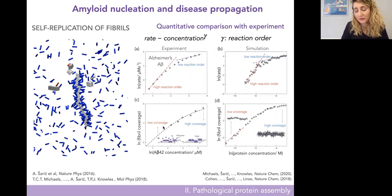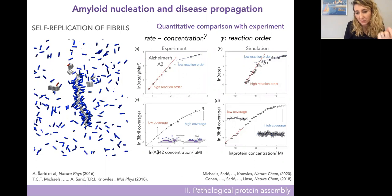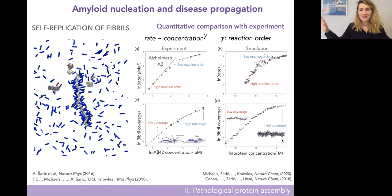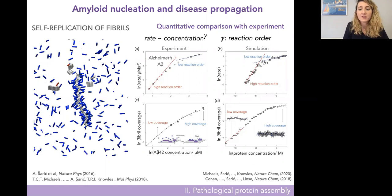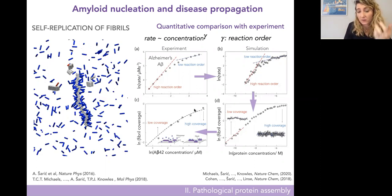Our collaborators Thomas Knowles and Sarah Lindsay measured how the rate of self-replication scales with protein concentration. The scaling exponent in chemistry — called the reaction order — tells you how many molecules meet in the rate-determining step and reveals the mechanism. They found that the scaling exponent continuously changes over the concentration range for the Aβ Alzheimer's protein, which would mean the mechanism continuously changes — something they were perplexed by. We went back to simulations and naturally found the same behavior, and we could explain why: at low concentration only a few proteins adsorb onto the fibril; at high concentration the fibril gets completely saturated and the reaction becomes insensitive to protein concentration.